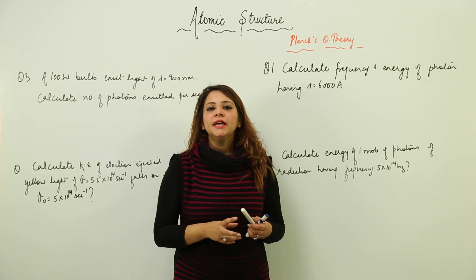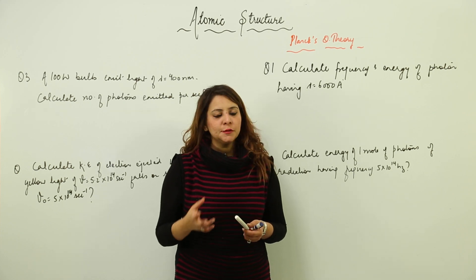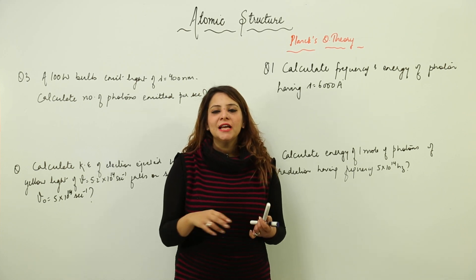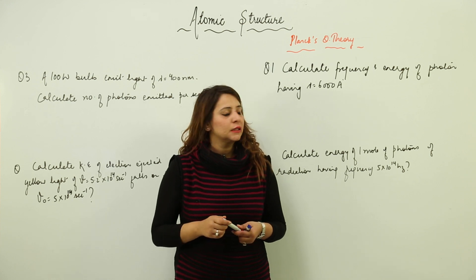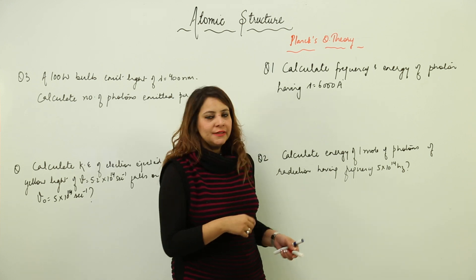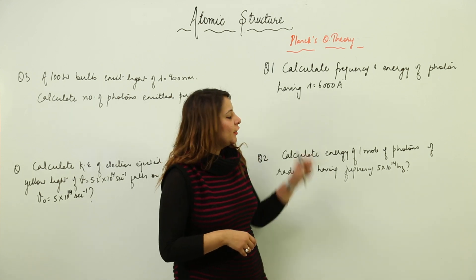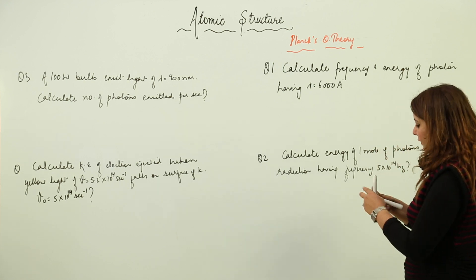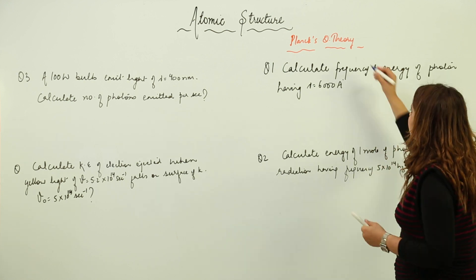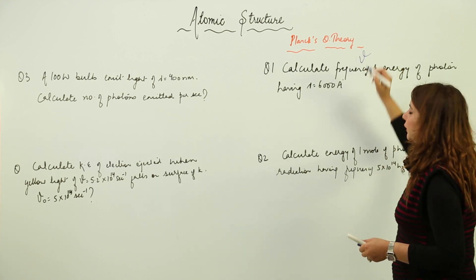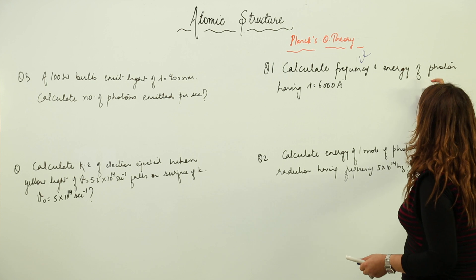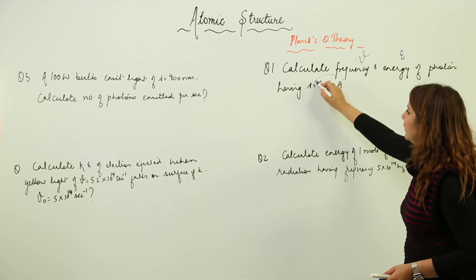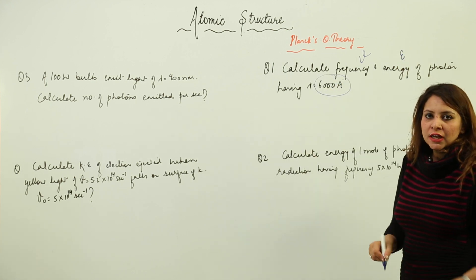Now we are going to take a few numerical problems on Planck's quantum theory as well as the photoelectric effect. The first question is: calculate the frequency and energy of the photon having wavelength 6000 Angstroms.